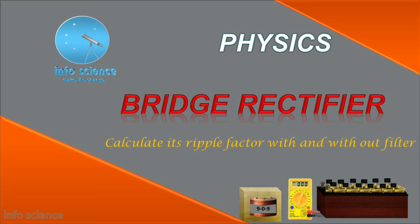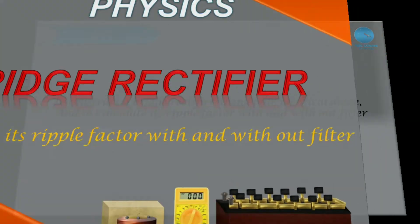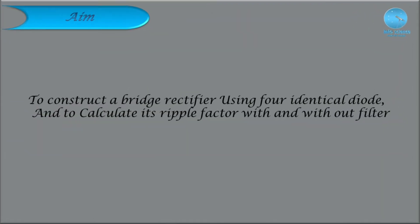We can move to the aim of this experiment. The aim of this experiment is to construct a bridge rectifier using four identical diodes and to calculate its ripple factor with and without filter.